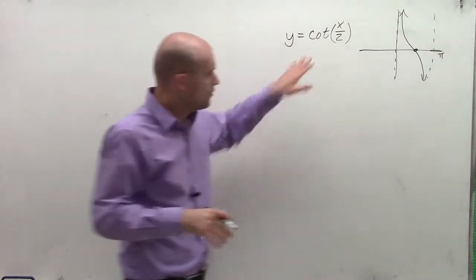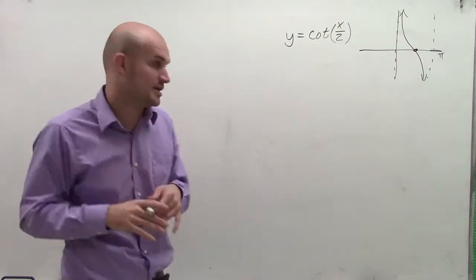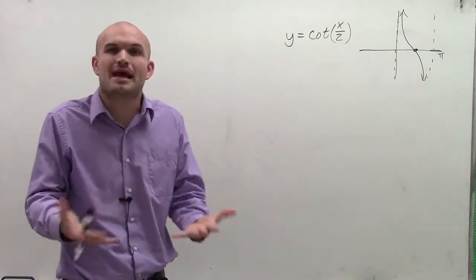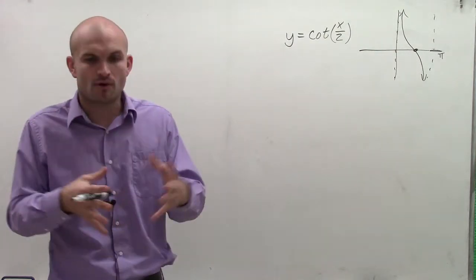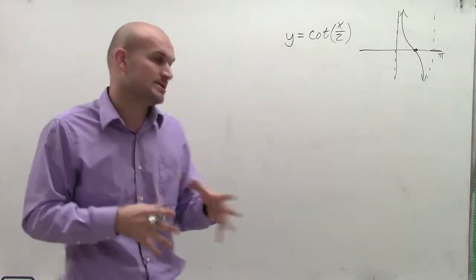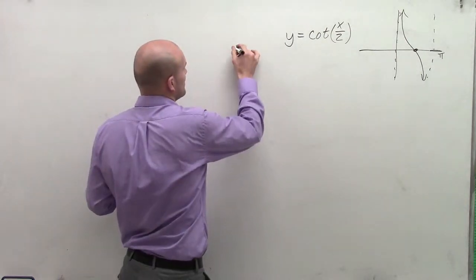So what we have is we have a bit of a transformation here, and we need to understand what's going to be actually happening to our cotangent graph. So what we're going to do is we're going to find our important elements. The first thing we want to do is determine what the period is.